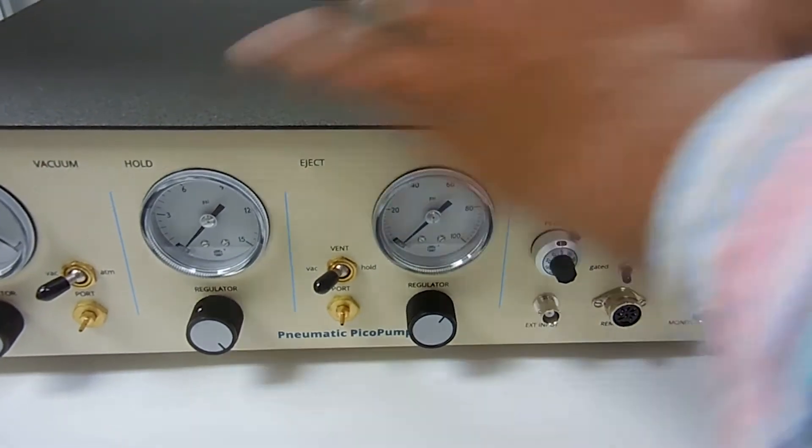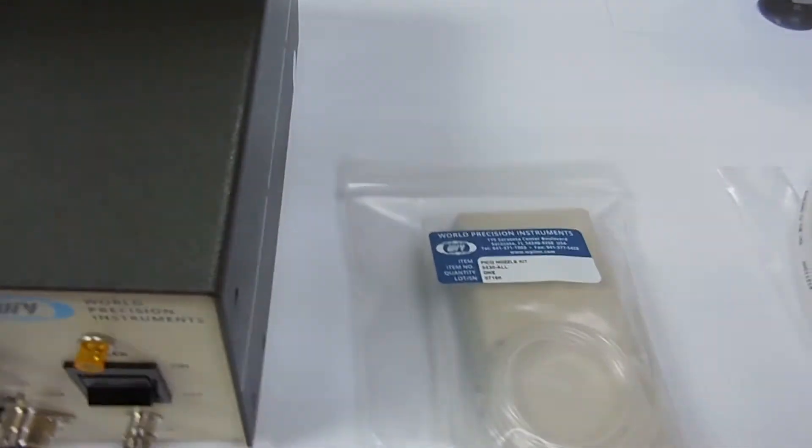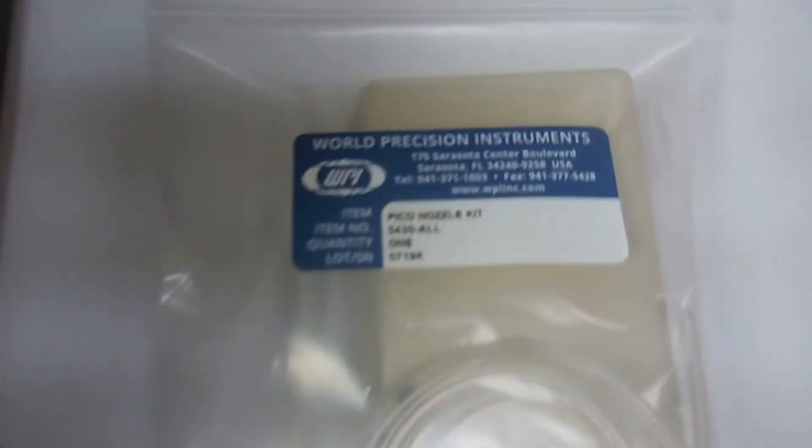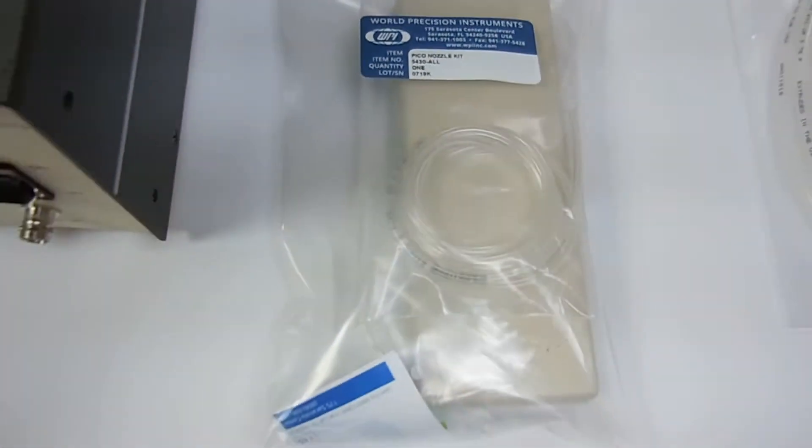So we take this out of the box, set it on your lab space. The second kit is what we call the pico nozzle kit. The pico nozzle kit, you receive two of these with each system.